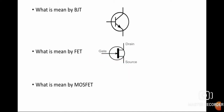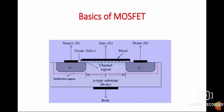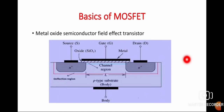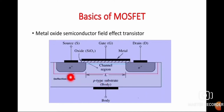Now, what is MOSFET? The long form of MOSFET is metal oxide semiconductor field effect transistor. This figure shows the construction of MOSFET. It consists of a P-type substrate — that is the body of MOSFET — in which N-type materials are doped. From these N-type materials, metallic terminals are taken outside of the substrate, and those terminals are labeled as source and drain.